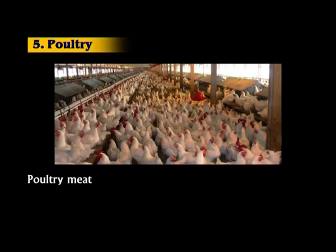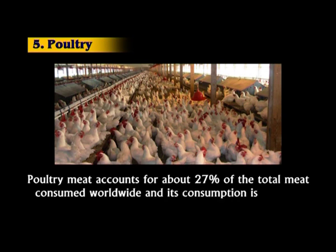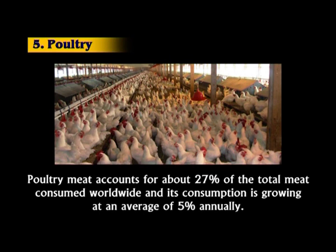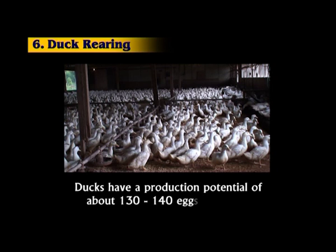Next is poultry. Poultry meat accounts for above 27% of the total meat consumed worldwide and its consumption is growing at an average of 5% annually. Next is duck rearing. Ducks have a production potential of about 130 to 140 eggs per bird per year.